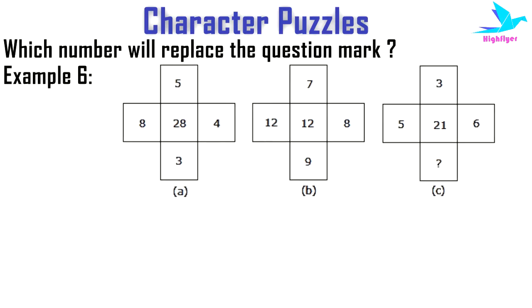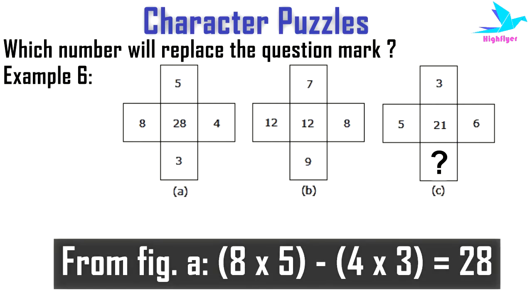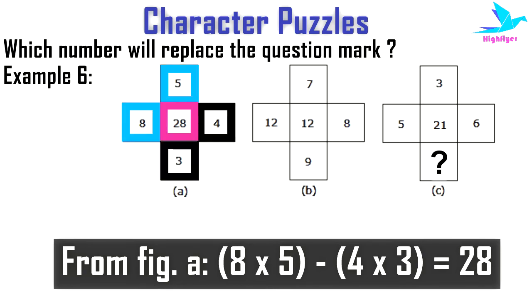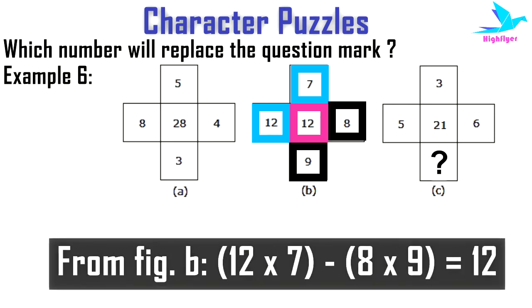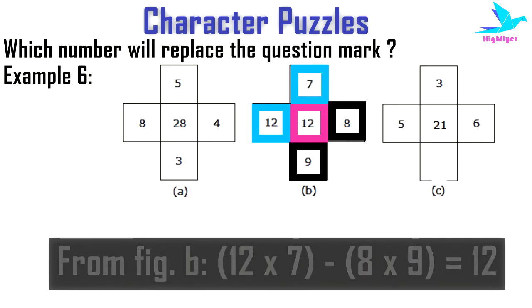In the next example, we see three figures with a question mark in figure C. Looking at figure A, the relation is: 8 × 5 − 4 × 3 = 28 — meaning the product of the numbers at the top and left, minus the product of the numbers at the right and bottom, equals the central number. In figure B it is 12 × 7 − 8 × 9 = 12.